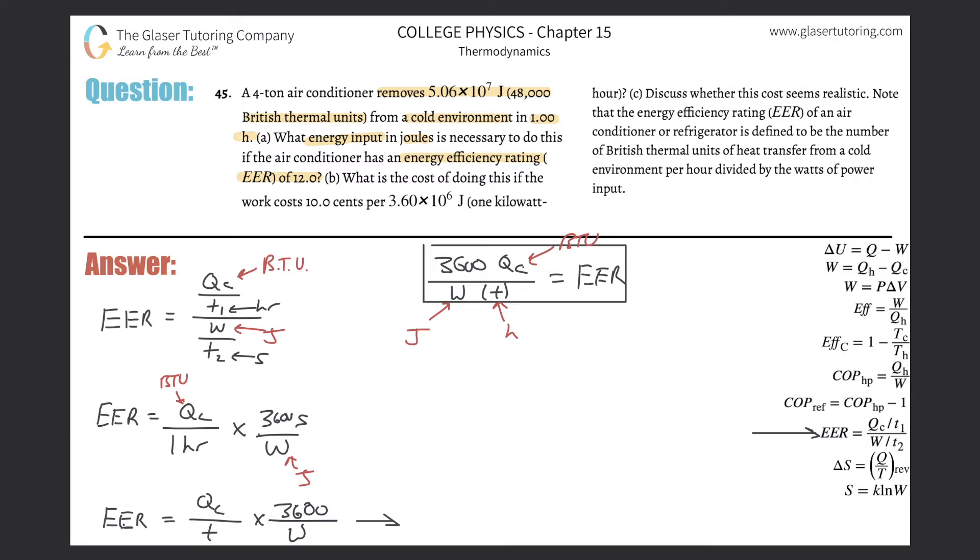So, now, we can approach this particular problem. So, what did they tell us? They told us the air conditioner removes this amount of heat, and they gave us the thermal units, the British thermal units, of 48,000, so they told us basically Q sub C.